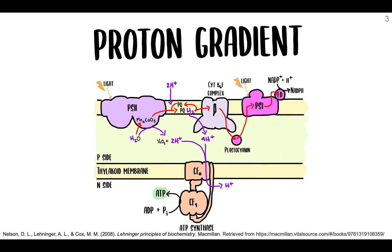Let's talk about numbers, because you see a bunch in this figure. Around eight photons provide enough energy for the synthesis of three ATP molecules, and this ultimately yields two NADPH. Multiplying this by two, these ATP and NADPH molecules will ultimately be used to reduce one molecule of carbon dioxide, which is the next step.